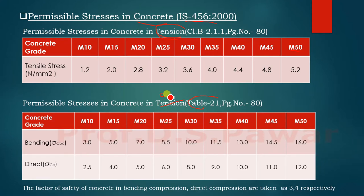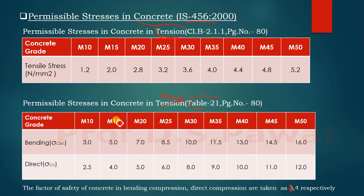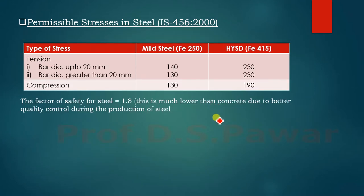In compression we have bending stresses and direct stresses. For bending stresses, for M10 concrete it is 3 N/mm² and for M15 concrete it is 5 N/mm², up to M50 concrete. The factor of safety considered for bending stresses is 3, and for direct stresses the factor of safety is 4 — so 3 and 4 respectively. These are the permissible stresses given in IS 456 that we will use for design by working stress method.